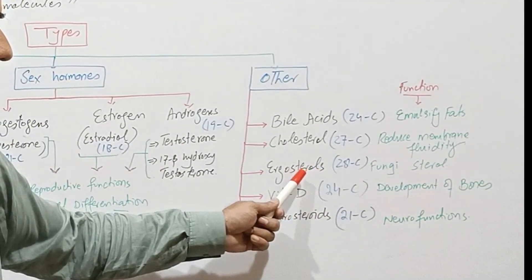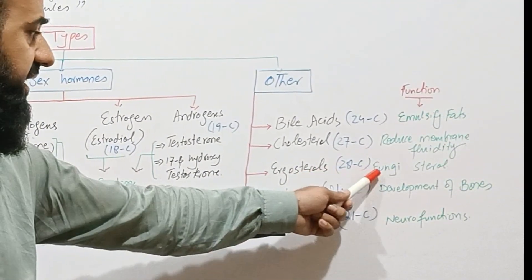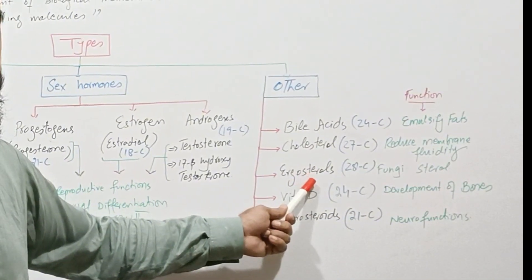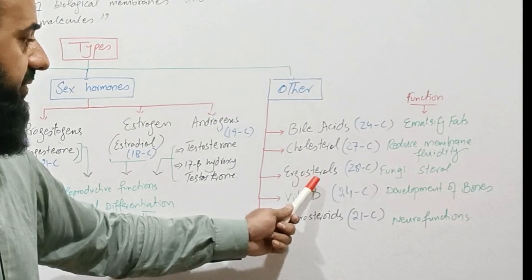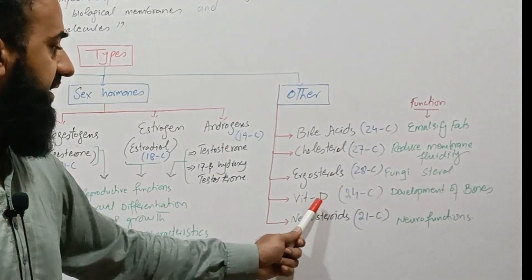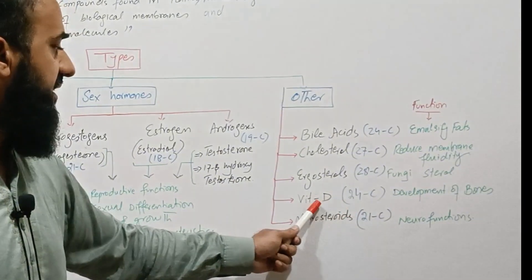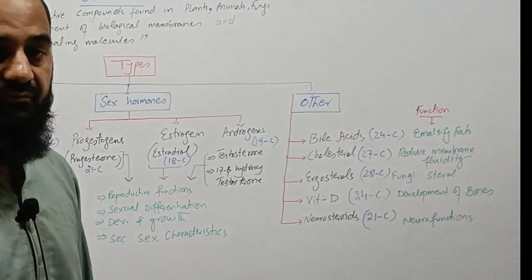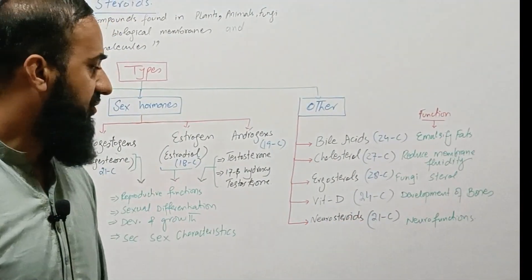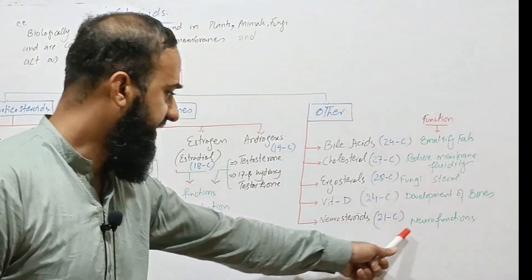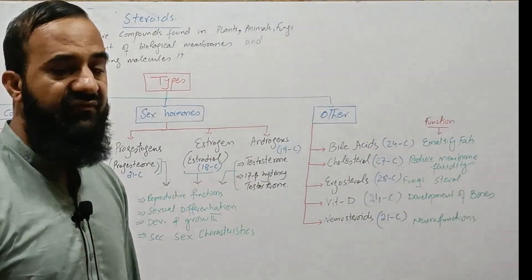Ergosterol is a sterol of fungi and when this is irradiated with ultraviolet radiation it is converted into vitamin D2. There are different types of vitamin D, and one of the vitamin D contains 24 carbons, vitamin involved in development of bone. And the steroids found in nervous system are called neurosteroids and they have many neural functions.